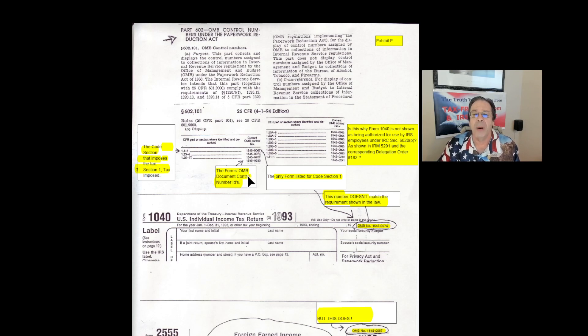And what is the form that this document control number 1545-0067 that's required by the tax imposed, what is the form that that control number is on? Oh, look, here it is down here. Form 2555. What? Here it is, here's the OMB control number 1545-0067. And what's the name of the form? It's not domestic income. Foreign earned income. Foreign, foreign earned income. That's what you're required to report under Section 1 tax imposed. Oh, look what it says right here: For use by U.S. citizens and resident aliens only.